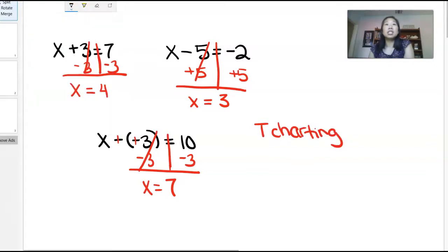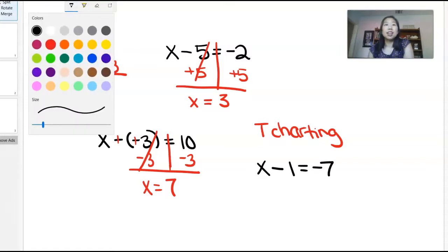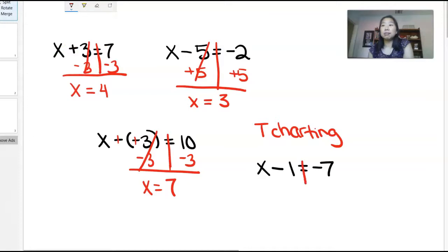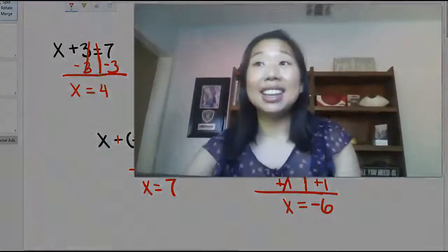So you have x - 1 = -7, we'll do one more example just for good luck. We will do our T chart, and the opposite of negative 1 is plus 1, and we do it to both sides of our mirror. So we have -7 + 1 is going to be -6, and that's it. All you need for your students to be successful with one-step equations is a T chart.